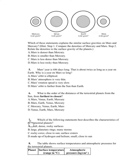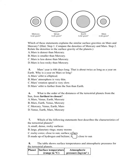Number 7. Which of the following statements best describes the characteristics of the terrestrial planets? A. Small, dense, rocky surfaces. B. Large, planetary rings, many moons. C. Rocky cores, close to the Sun, surface craters. D. Made up of hydrogen and helium, small, close to the Sun.